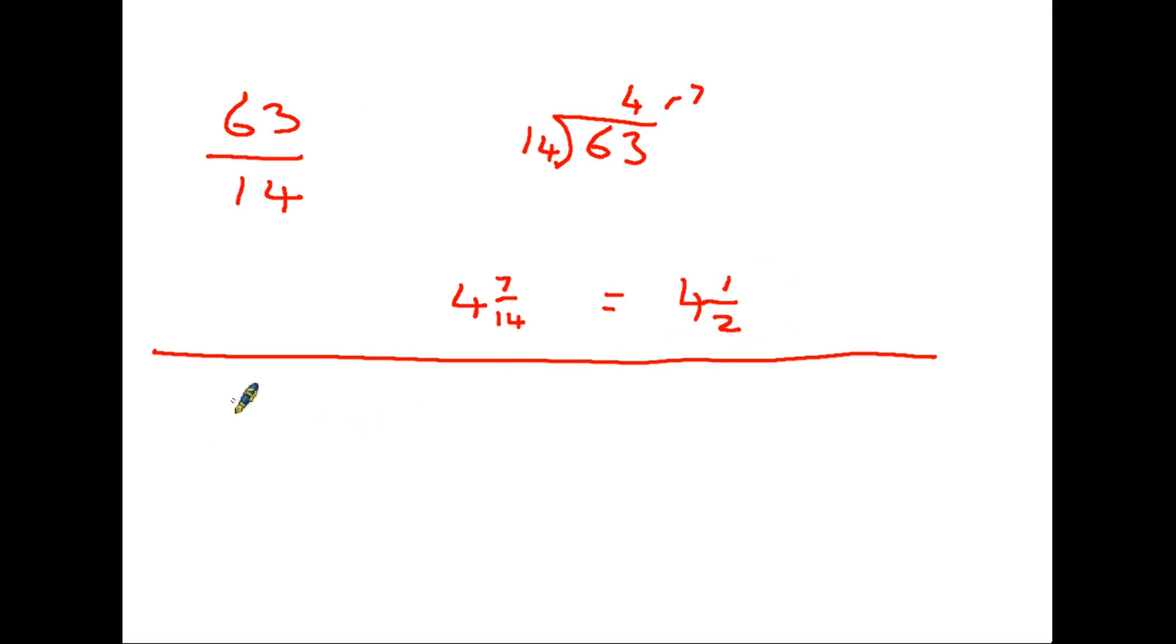However, what you could have done, and this is a perfectly acceptable method, is to see whether or not you can actually simplify this fraction before you start. And in fact, if you look at this, both these numbers are on the seven times table. And if you simplify, you actually get the answer nine over two.